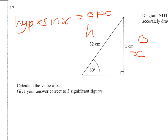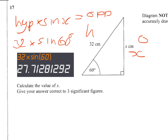So you can drop the hypotenuse in — that's 32 — times sine 60 degrees, and then use your calculator to finish. This gives us the number you see in the calculator display I've just inserted onto the screen.